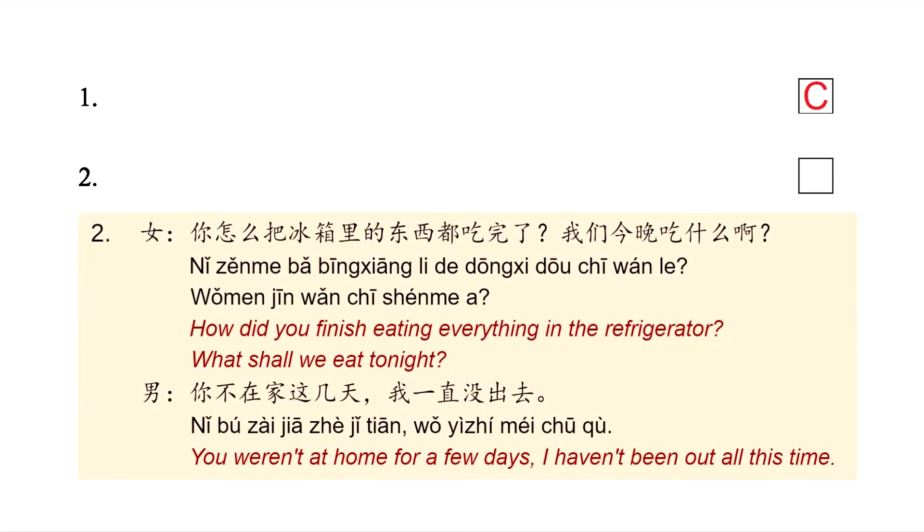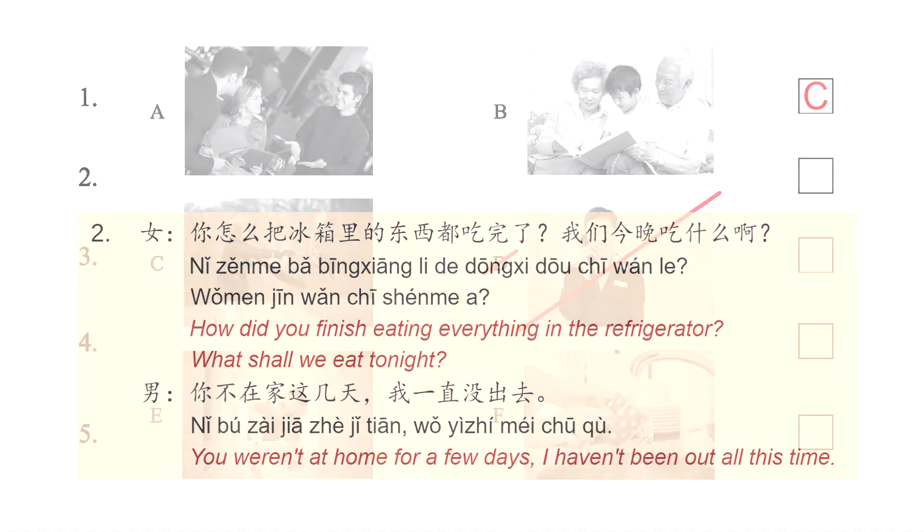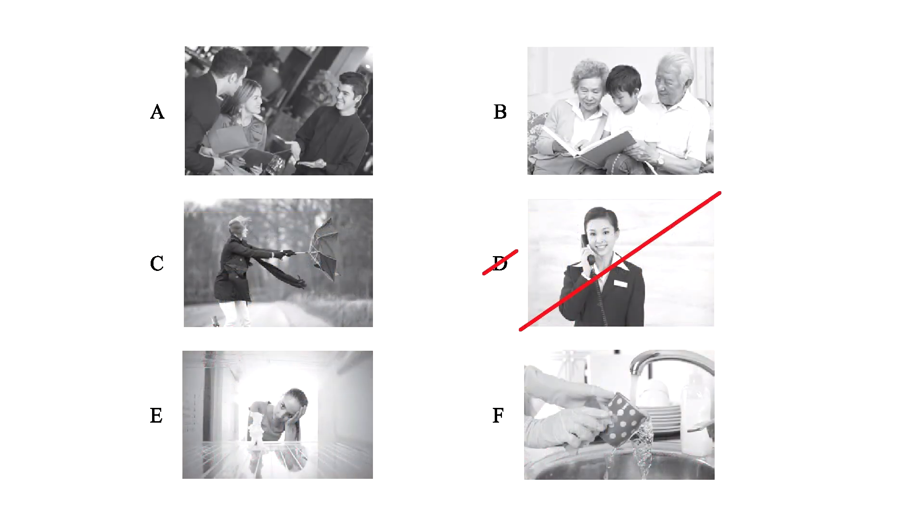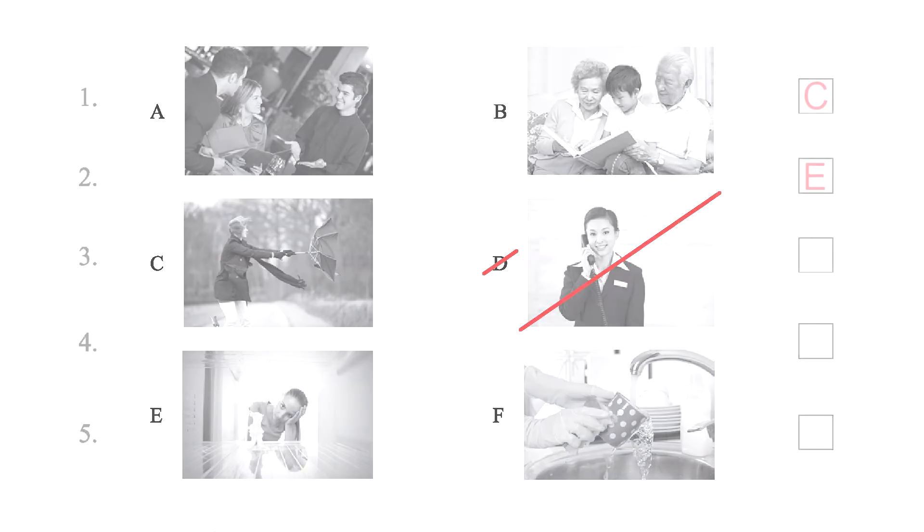In the recording, we hear a woman asking 你怎么把冰箱里的东西都吃完了？我们今晚吃什么？ How did you finish eating everything in the refrigerator? What shall we eat tonight? The man answers 你不在家这几天，我一直没出去. You weren't at home for a few days, I haven't been out all this time. In picture letter E, we have a woman looking into the inside of a fridge, so this is the correct answer.